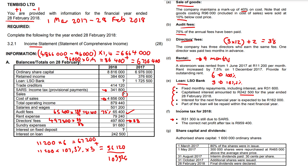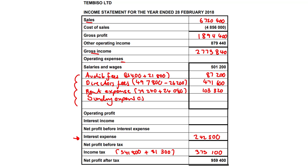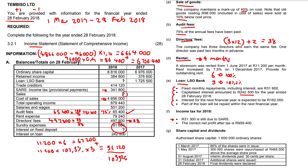Feel free to pause and look carefully — there's still one operating expense we've missed that's worth an easy mark. It's sundry expenses — we can just write that in. If you just run through the list, that is the only operating expense we missed.